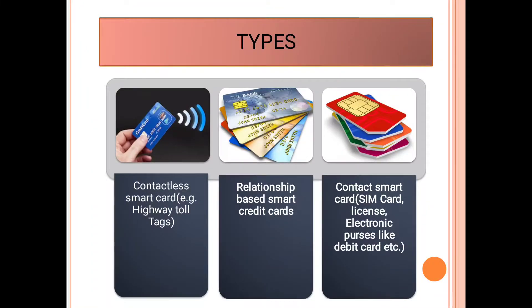There are many types of smart card. The main types are given below in the table. First is contactless smart card, such as highway toll tags. Second is relationship-based smart credit cards. Third is contact smart card, such as SIM card, license, electronic purses, like debit cards.